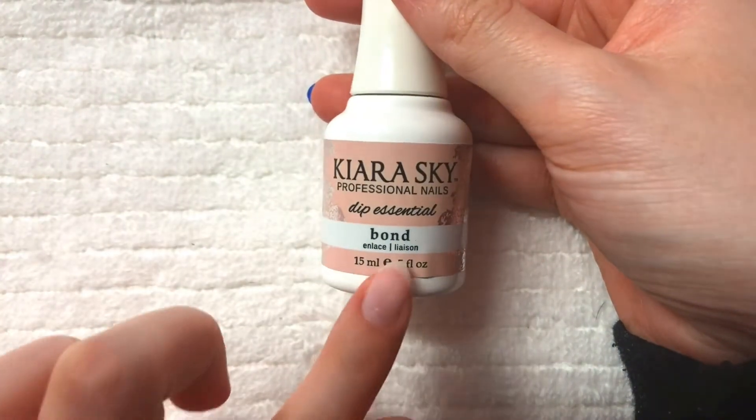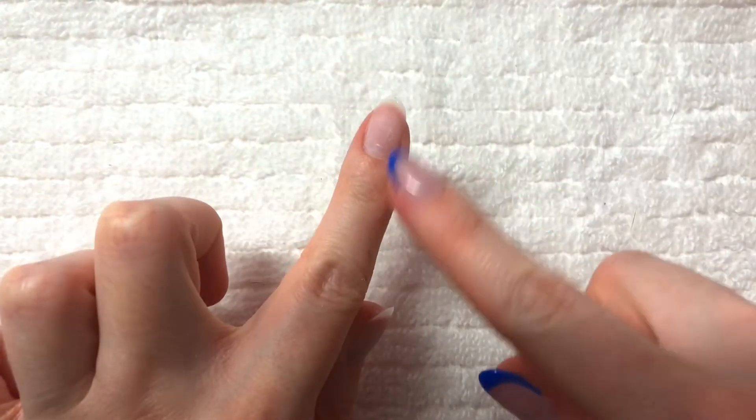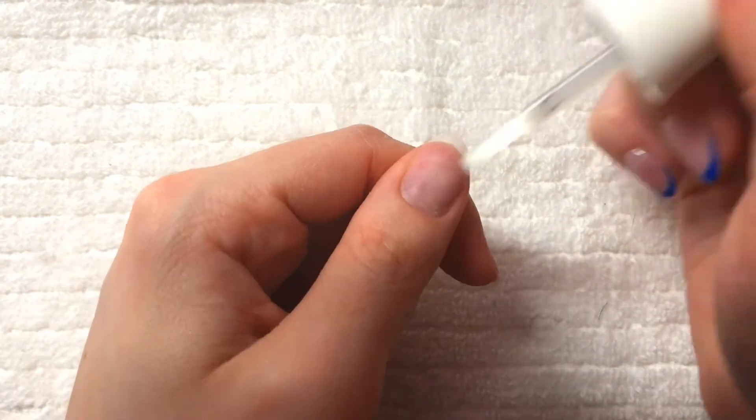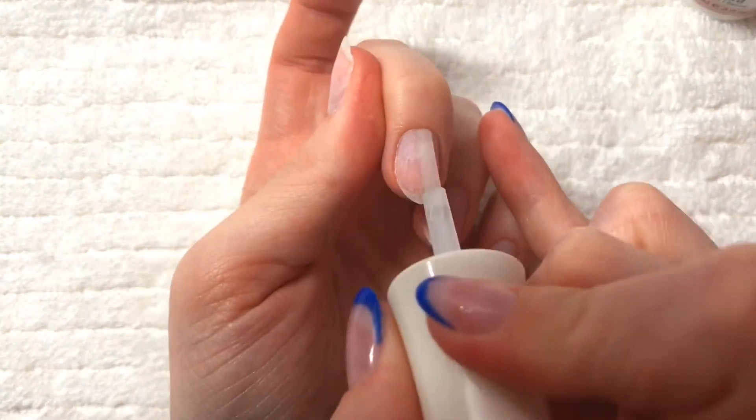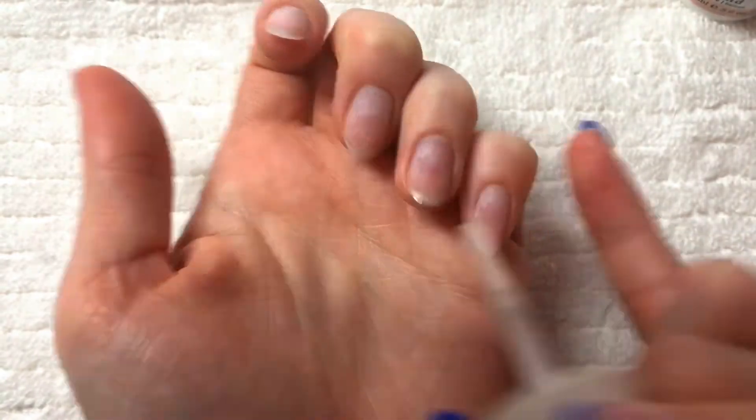After that, I am taking my bond and I am applying that to my natural nails. You want to make sure that this is applied to all of your nails, that way the product sticks and stays.